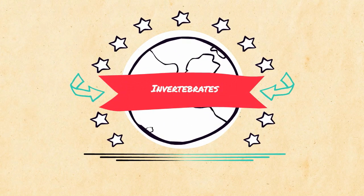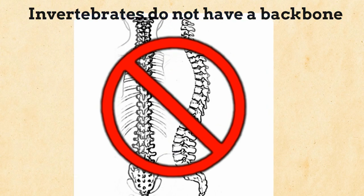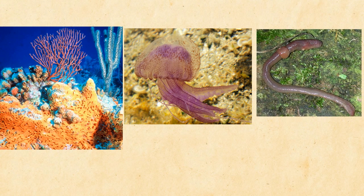Invertebrates make up the largest amount of animals on earth. They include sponges, cnidarians which have stinging cells such as jellyfish, and many types of worms. In fact there are thousands of species of worms.